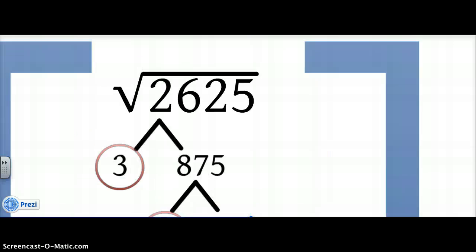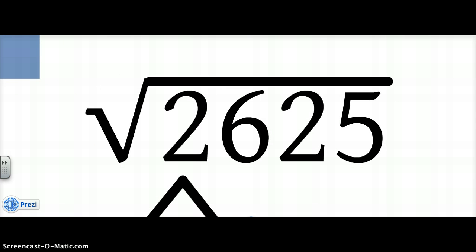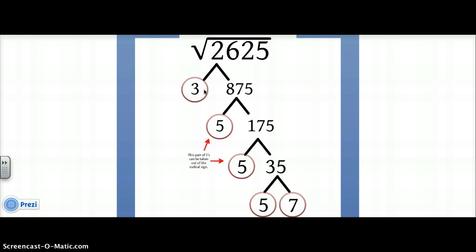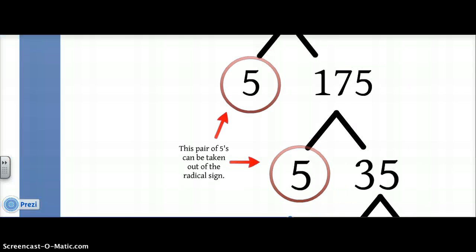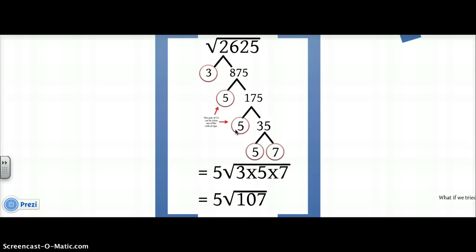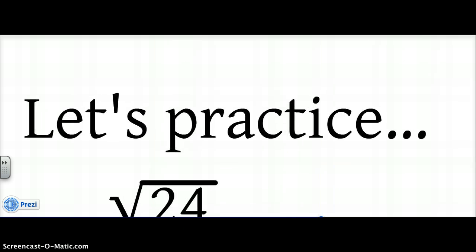What if we tried a larger number, like 2,625? Does 2 go into it? No, because it's not even. But 3 does — that's 3 times 875. 875 is divisible by 5: 5 times 175. Not divisible by 2 or 3, but divisible by 5: 5 times 35. And 35 is not divisible by 2 or 3, but divisible by 5: 5 times 7. We end up with a pair of 5's that come out of the radical, and everything else stays in — giving us 5 times the square root of 107.